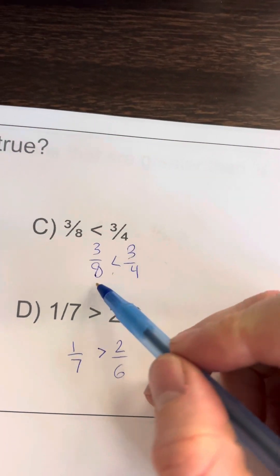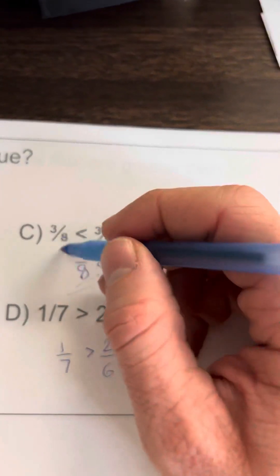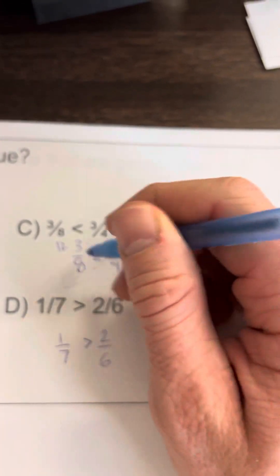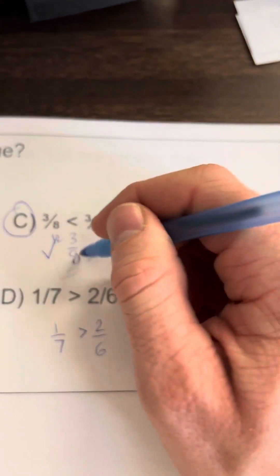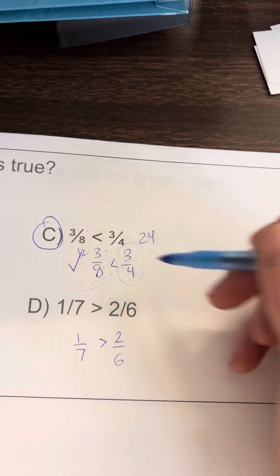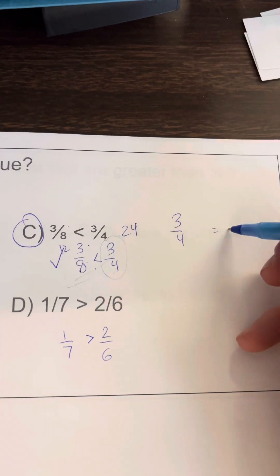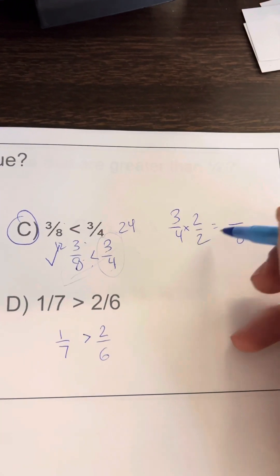I think we can just cross multiply though, it's a great method. Eight-thirds is 24; 4 times 3 is 12. 12 is less than 24. This is true: three-eighths is less than three-fourths. And if we think about three-fourths as a fraction with eight in the denominator, you would get six-eighths. So three-eighths is less than six-eighths—true.